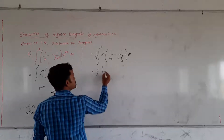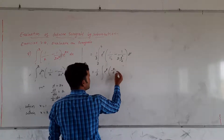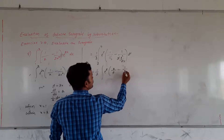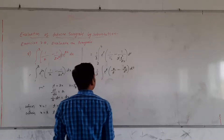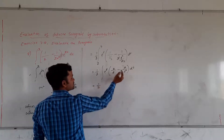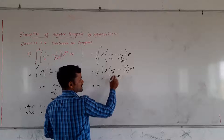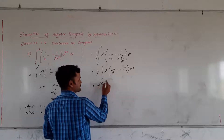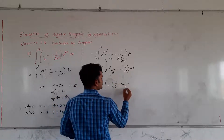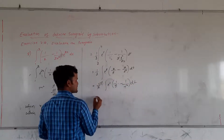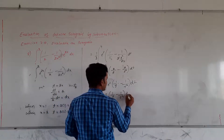So we have 1/2 times the integral of e raised to t into [2/t minus 2/t²] · dt. From these two terms, 2 is common: 2 times e raised to t into [1/t minus 1/t²]. That 2 cancels with the 1/2 outside. We have e raised to t into [1/t minus 1/t²] · dt.